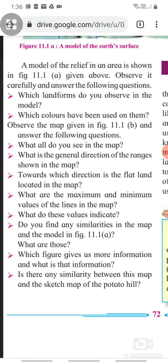What is the general direction of the ranges shown in the map? Towards which direction is the flat line located in the map? What are the maximum and minimum values of the lines in the map? What do these values indicate? Do you find any similarities in the map and the model in figure 11.1a? What are those? Which figure gives us more information and what is that information? Is there any similarity between this map and the sketch map of the potato hill?